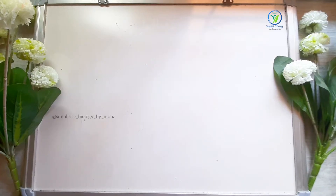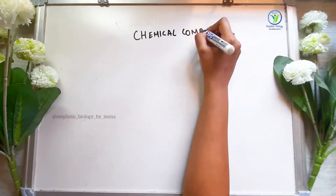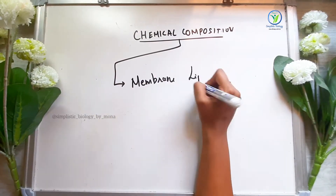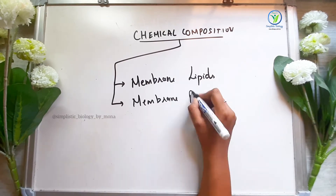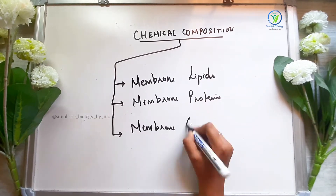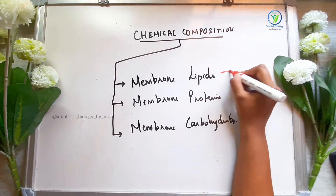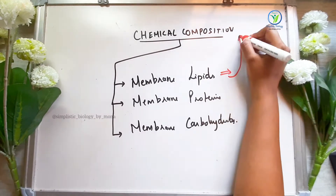Hey all! Welcome to Mana Simplistic Biology. This video is about chemical composition of the plasma membrane: membrane lipids, membrane proteins, and membrane carbohydrates. This video will be clear about membrane lipids.